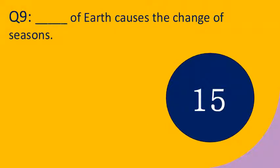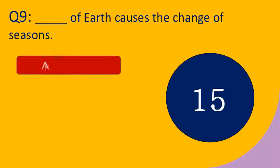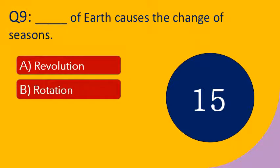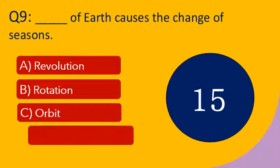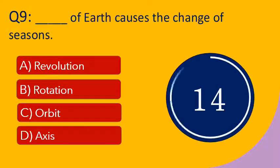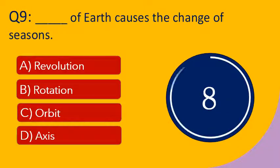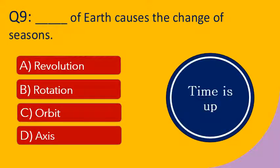Question number 9: Dash of the earth causes the change of seasons. Options are A. Revolution, B. Rotation, C. Orbit, and D. Axis. Your time starts now. Your time is up. The right answer is revolution.